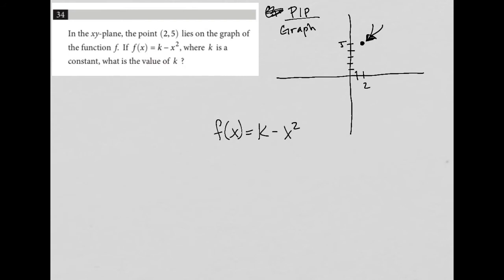So what does this point on the graph mean? It means that when x is equal to 2, y is equal to 5. We should also know that y and f(x) are the same thing.